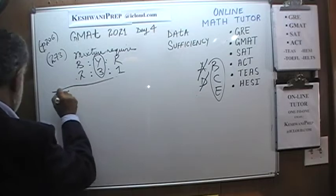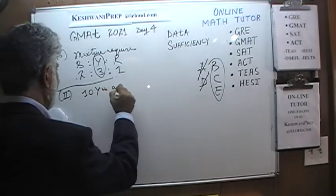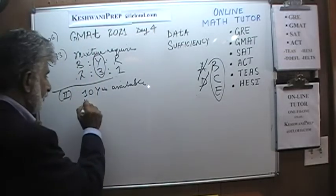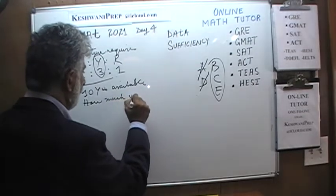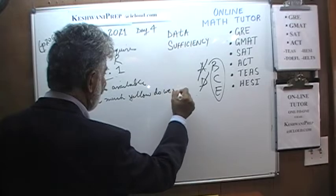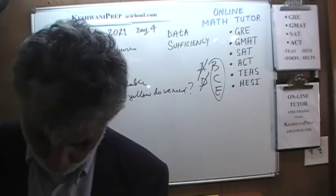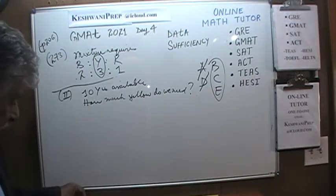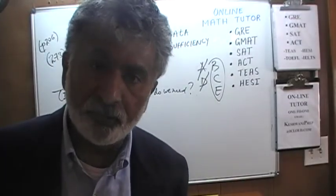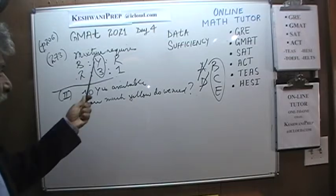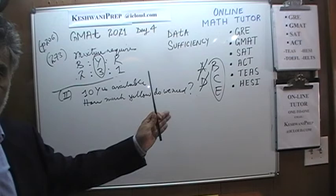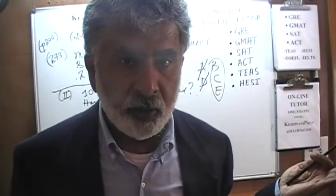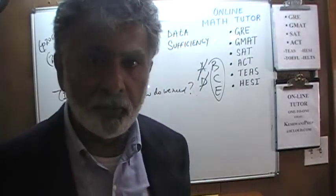The second statement tells us that 10 units of yellow are available. But how much yellow do we need? We don't know, because we don't know how many total units we need to make — that information was given in the first statement, which we must set aside. The second statement tells us we have 10 units of yellow, but we don't know the total units required. So the second statement by itself is not enough.